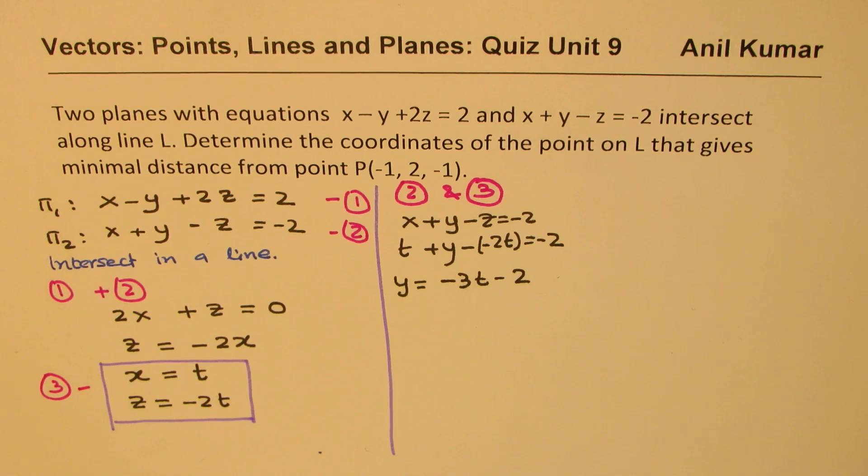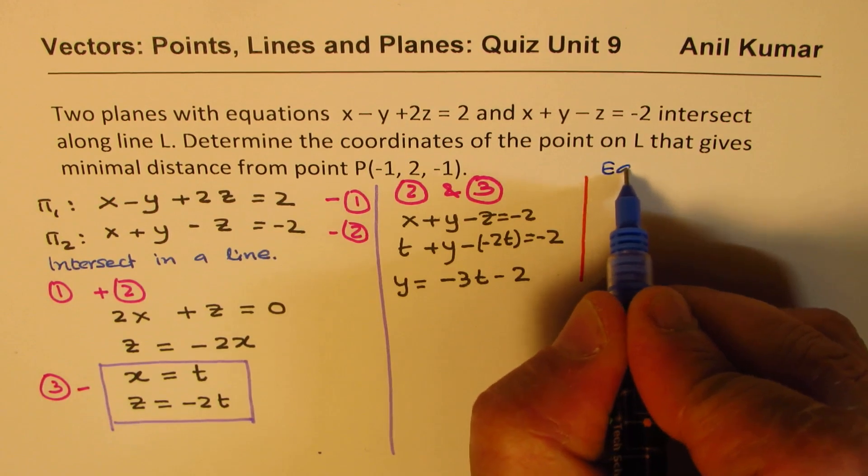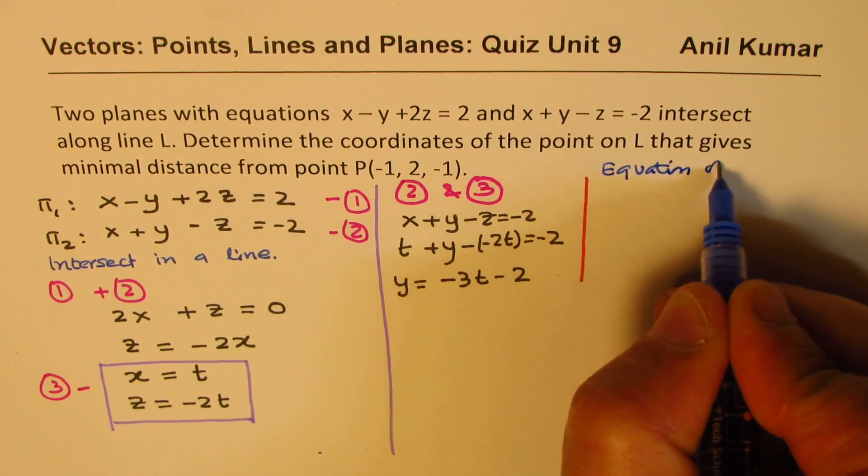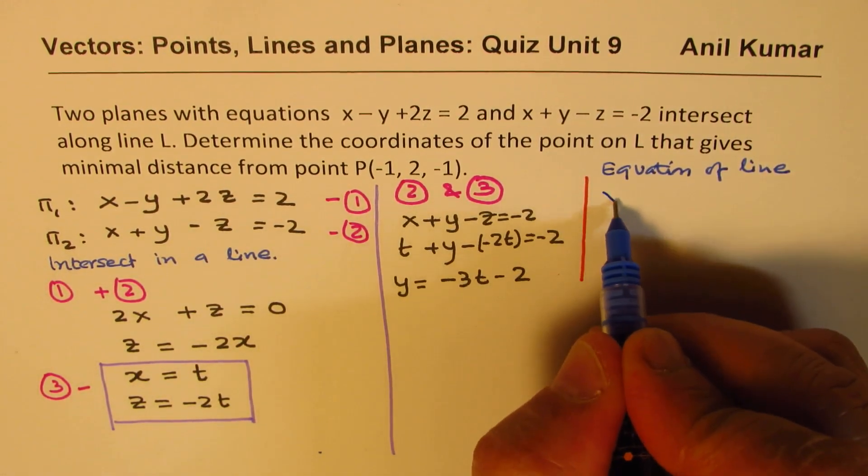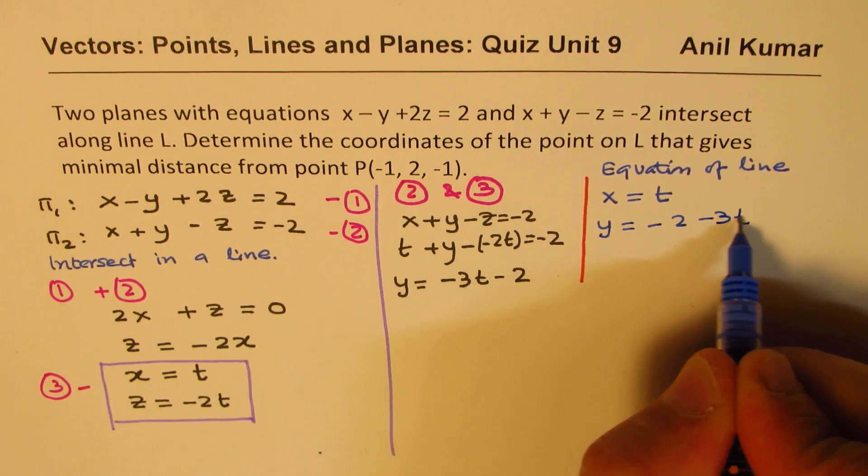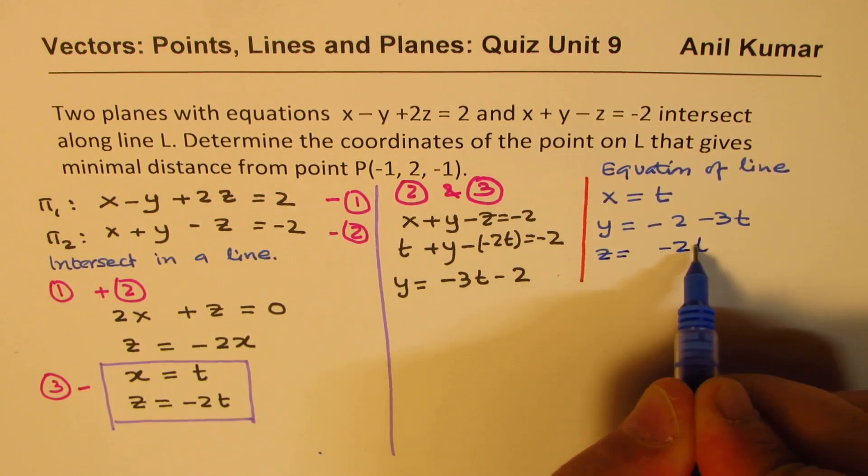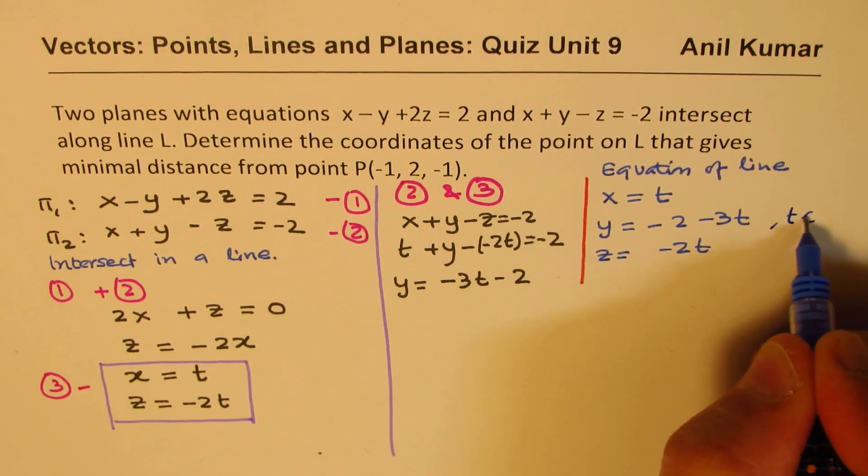Now we can actually write down the equation of line, the parametric form. The equation of line: x equals t, y equals minus 2 minus 3t, and z equals minus 2t. So that's the parametric equation, where t belongs to real numbers.